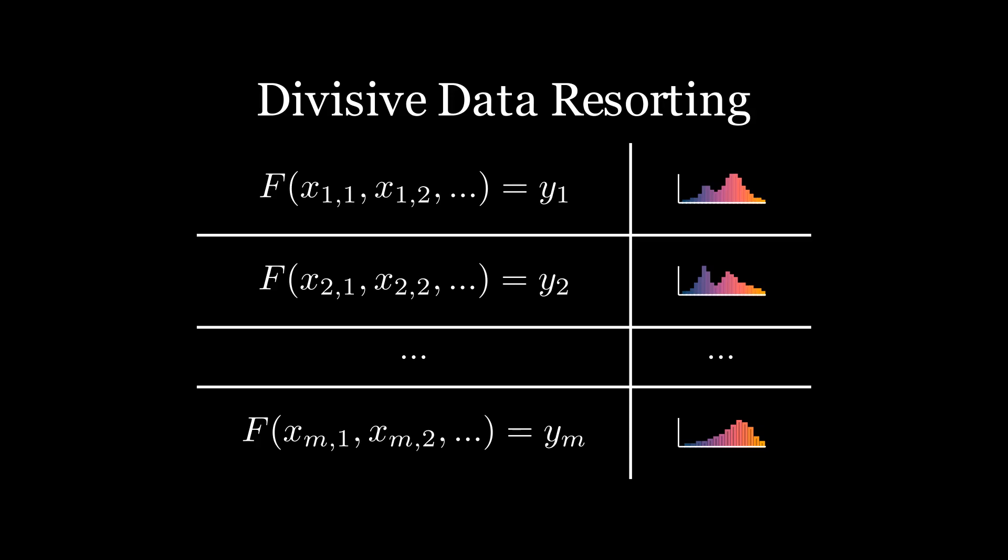There is only one critical property of the model system that makes Divisive Data Resorting considered reliable in this video. It is gradual changes in distributions, which means that for similar inputs, the output distributions should also be insignificantly different.